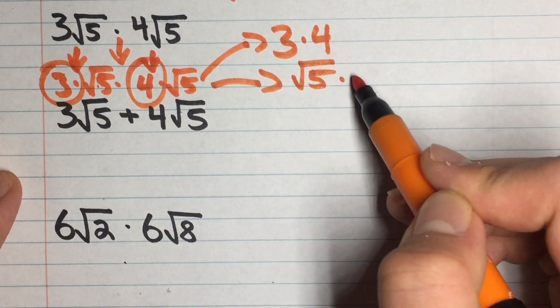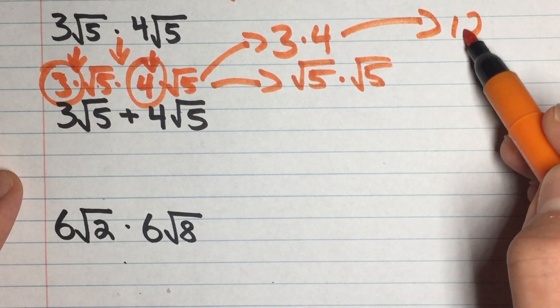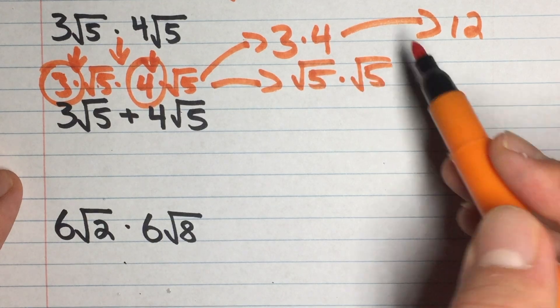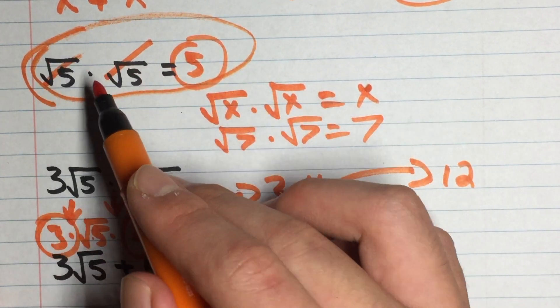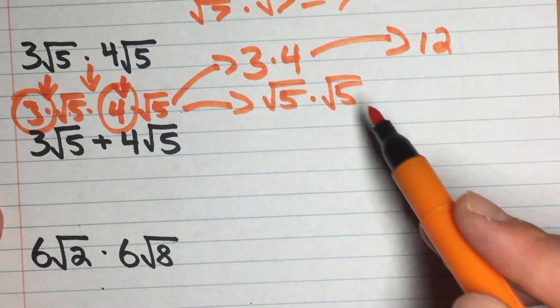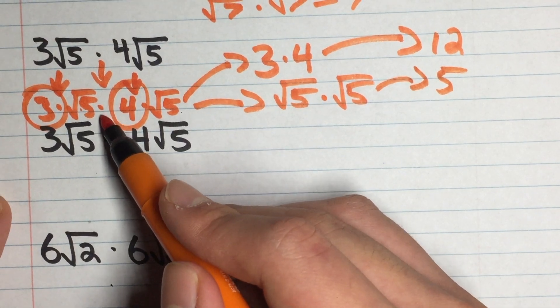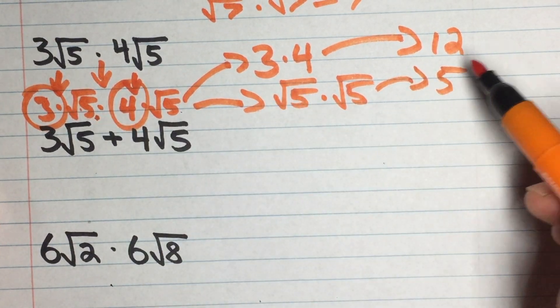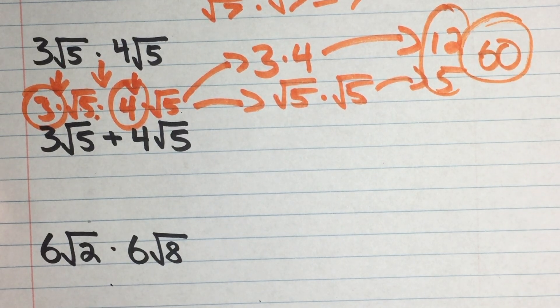And when we do this, 3 times 4, that gives us 12. Root 5 times root 5, remember what we did over here, back up here. So root 5 times root 5 is just 5. So root 5 times root 5 gives us 5. And since there was multiplication between the two, we just do 12 times 5, and that gives us 60. And that's our answer for this one.